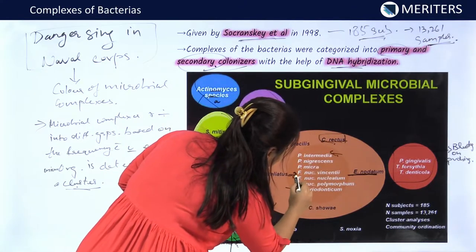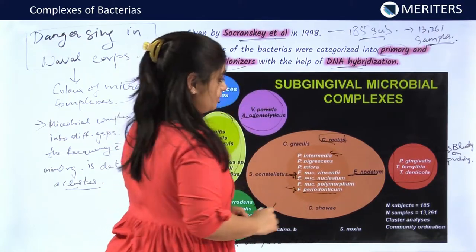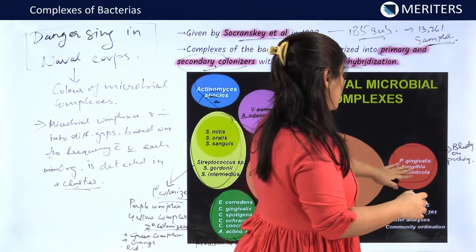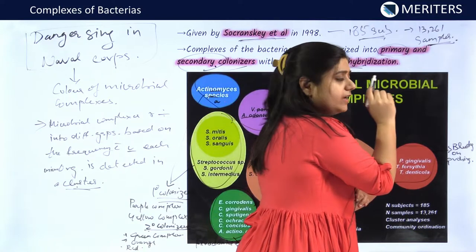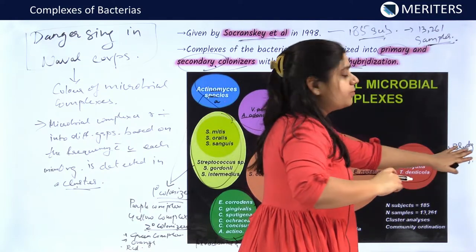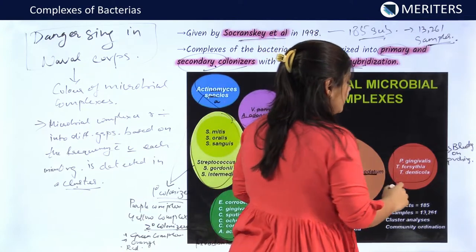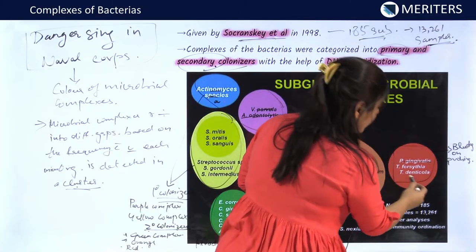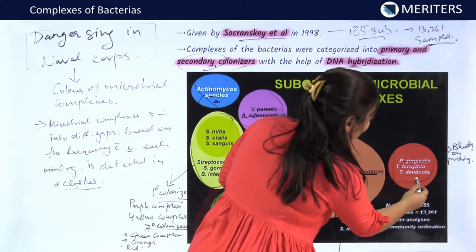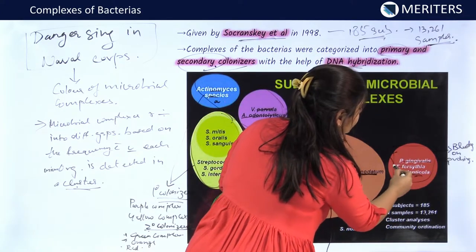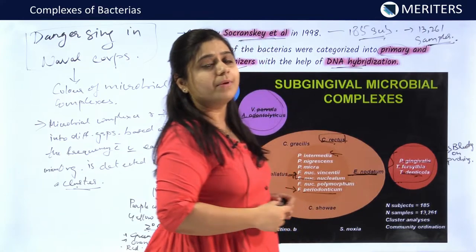The red complex is the smaller but most important complex, responsible for bleeding on probing in periodontitis. The bacteria are Porphyromonas gingivalis, Tannerella forsythia, and Treponema denticola. These three bacteria are very important for bleeding on probing in periodontitis.